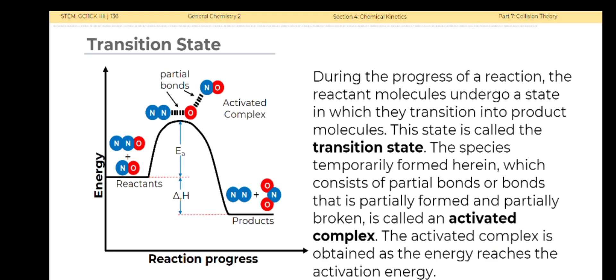During the progress of a reaction, the reactant molecules undergo a state in which they transition into product molecules. This state is called the transition state. The species temporarily formed herein, which consists of partial bonds or bonds that are partially formed and partially broken, is called an activated complex. The activated complex is obtained as the energy reaches the activation energy.